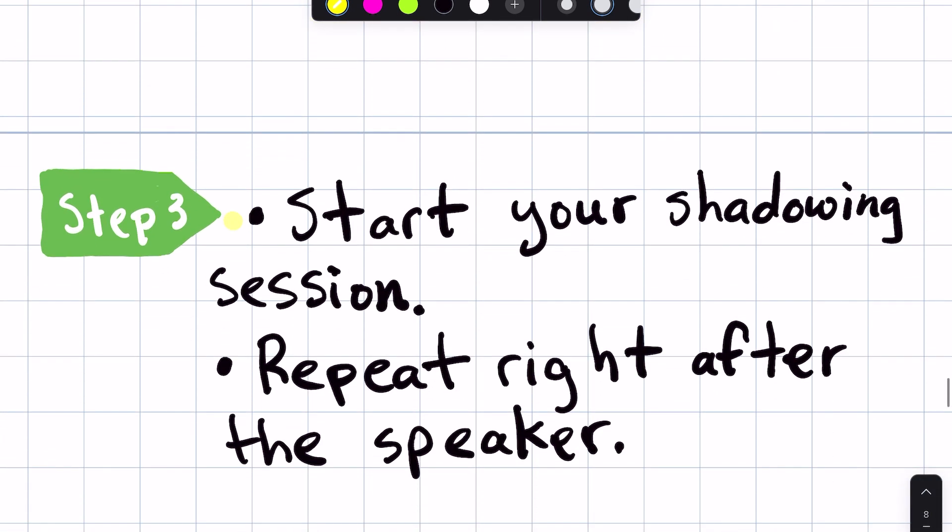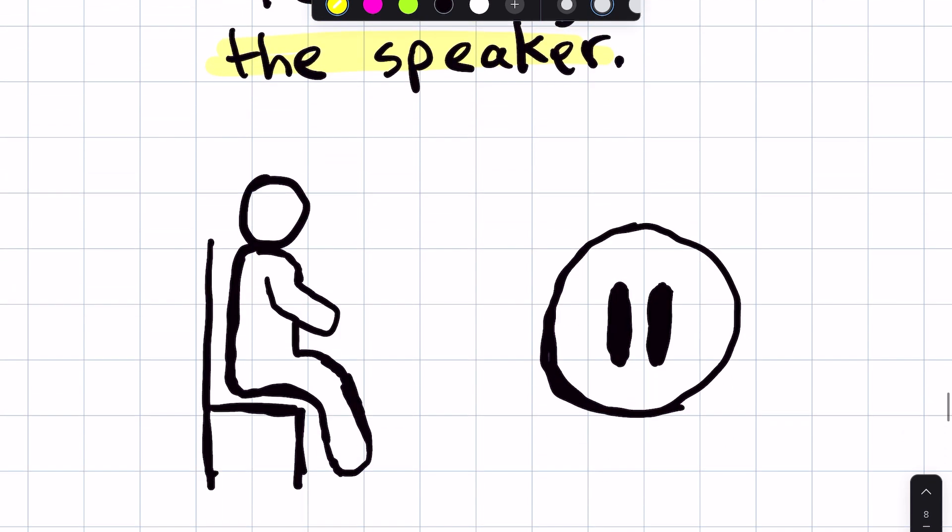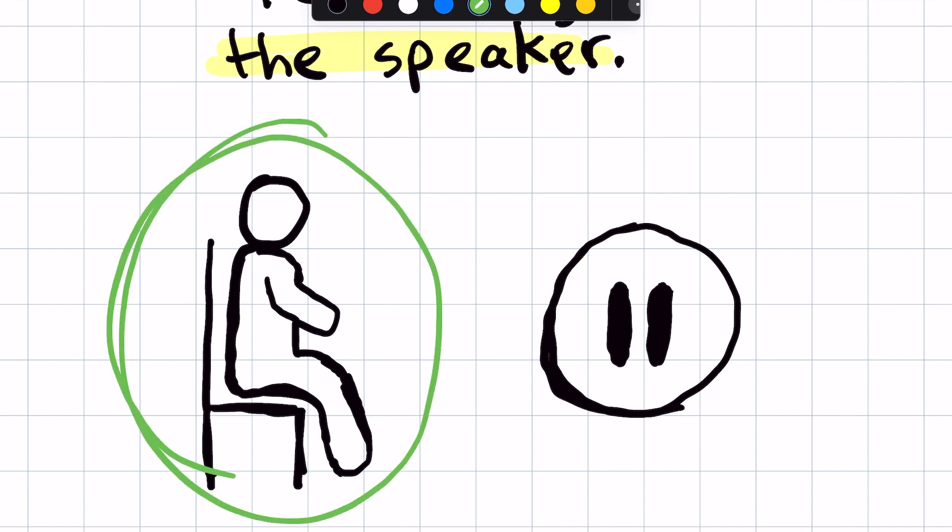And once you go on to step three, you can start your shadowing session. And so once you start, you want to repeat right after the speaker. So right after they say a word or a sentence, you want to say it back as quickly as possible. Like I said earlier, almost at the same time. And you want to sit upright. Your posture should be good. And you don't want to have any pausing within your shadowing session. And so you want to just have it flow as naturally as possible.